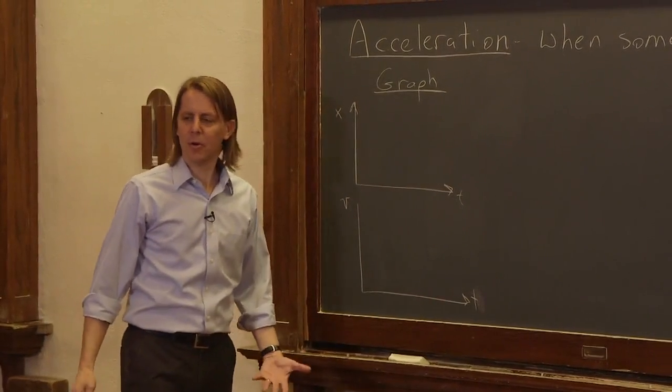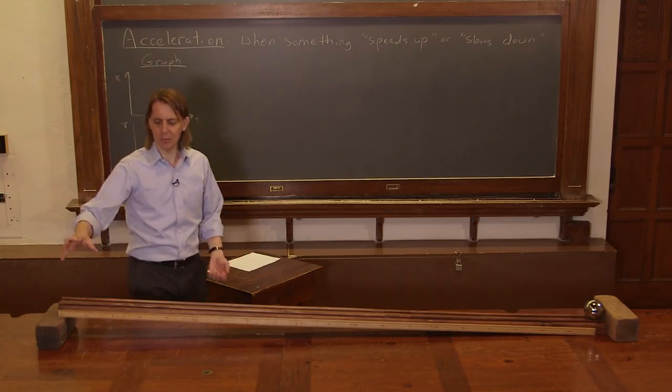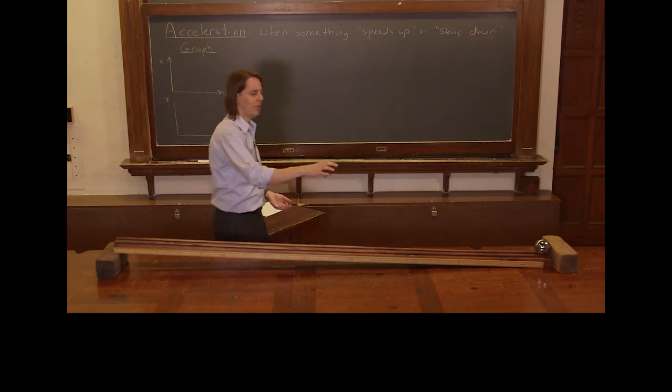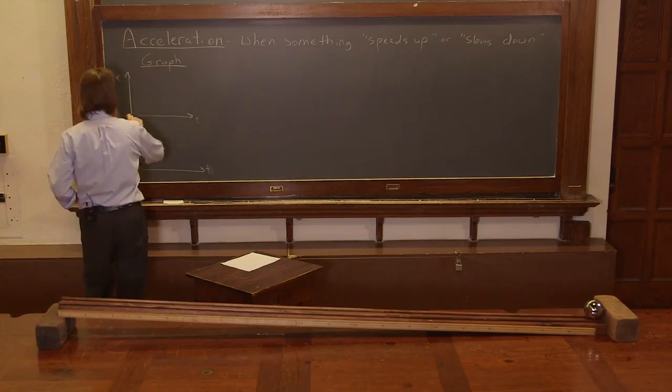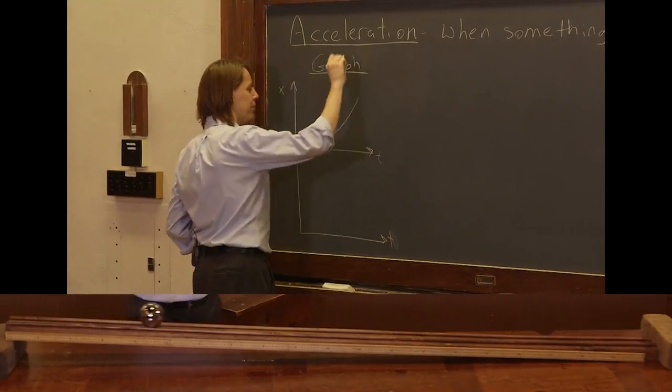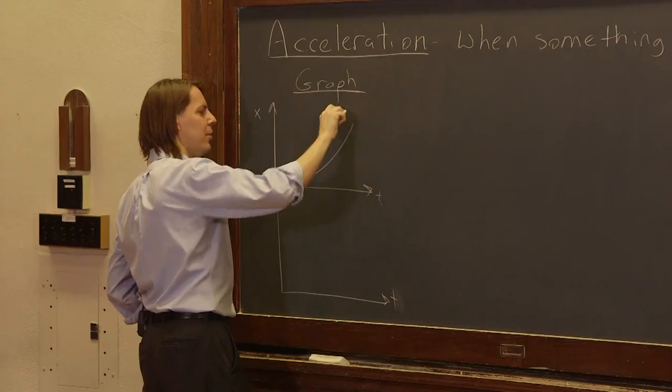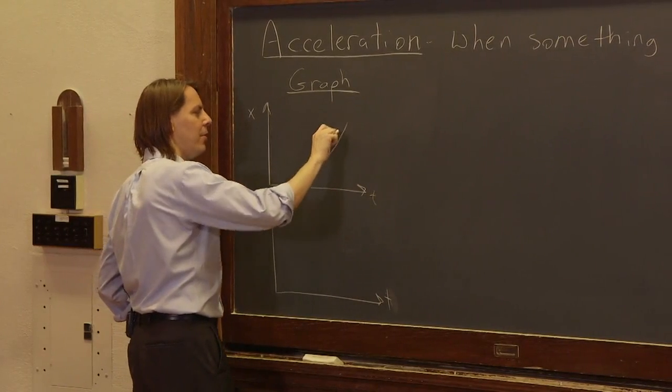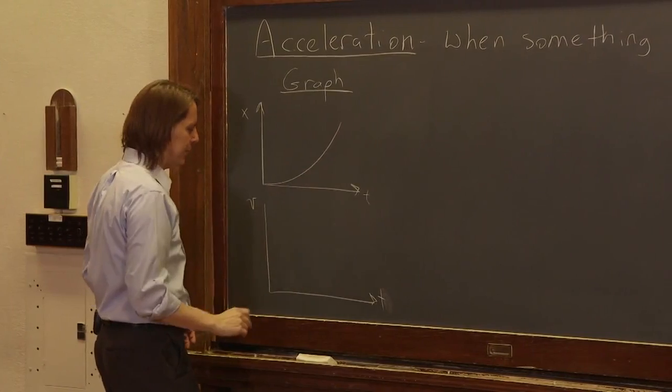So the position versus time is a little hard to draw, it's a little hard to visualize, but as it was getting faster and faster and speeding up, what you have, instead of it going up like a line for uniform motion, you have it basically going up like a curve. So you can see this is a kind of curve where the slope is getting higher and larger and larger as you go forward in time.